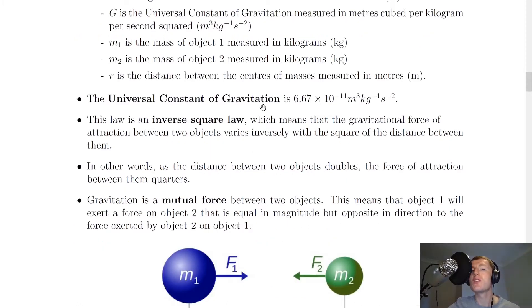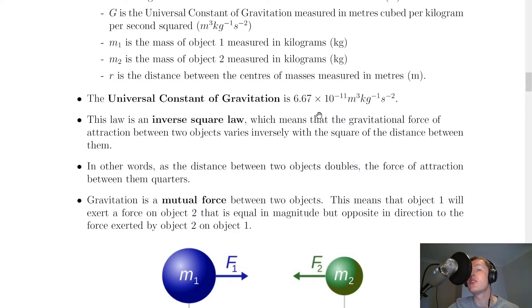The universal constant of gravitation takes a value of 6.67 times 10 to the minus 11 metres cubed per kilogram per second squared. You don't need to remember that number — it is on the data sheet.